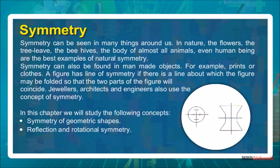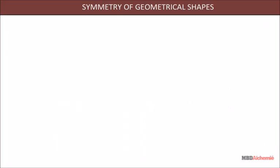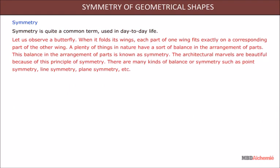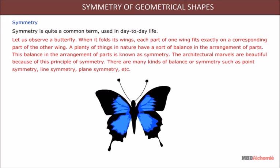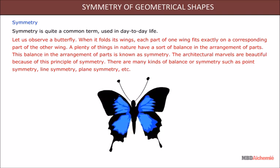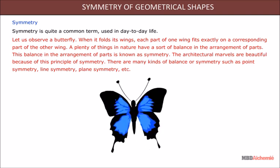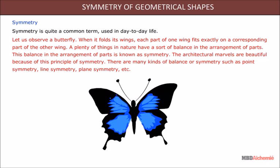In this chapter we will study the following concepts: symmetry of geometric shapes, reflection, and rotational symmetry. Symmetry is quite a common term used in day-to-day life. Let us observe a butterfly — when it folds its wings, each part of one wing fits exactly on the corresponding part of the other wing. A plenty of things in nature have a sort of balance in the arrangement of parts. This balance in the arrangement of parts is known as symmetry. Architectural marvels are beautiful because of this principle of symmetry.